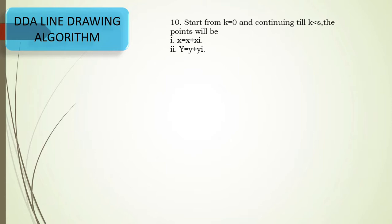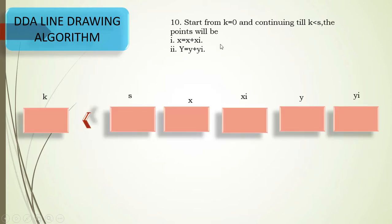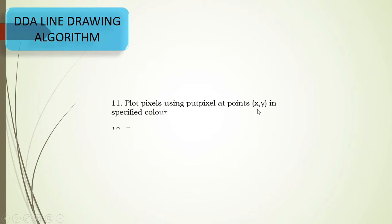To find the incremented values along the line, we start k at zero and loop while k is less than s, incrementing x by xi and y by yi each iteration, placing all values in a table. This is the main task of the algorithm. After the loop, we plot the calculated pixels using the putpixel function with a specified color, then call closegraph and stop.